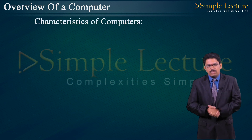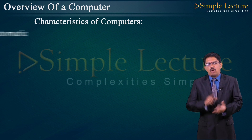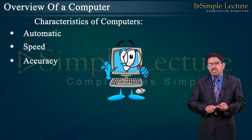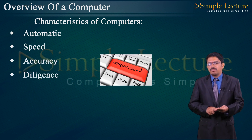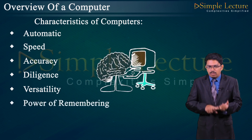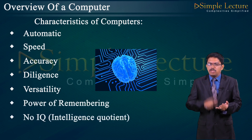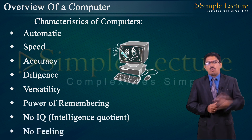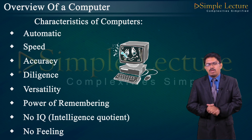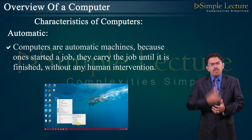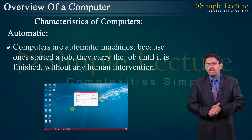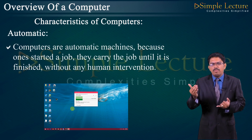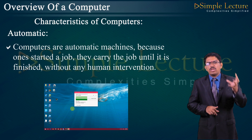Now let's move to the characteristics of a computer. They can be classified into 8 different characteristics: automatic, speed, accuracy, diligence, versatility, power of remembering, no IQ (intelligence quotient), and no feeling. The first characteristic is automatic — computers are automatic machines because once started, a job is carried out until it is finished without any human intervention.